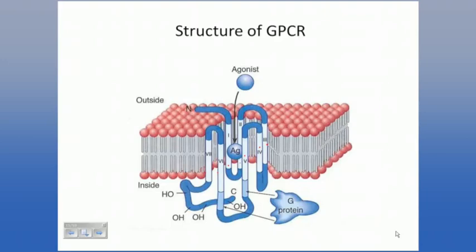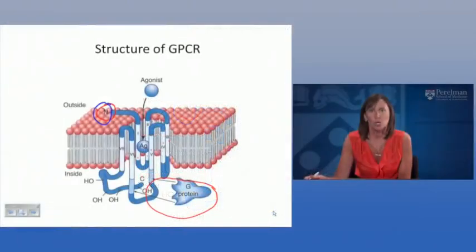In terms of receptor activity, there are two important components of this entire structure. One is the extracellular domain, and the other is the cytoplasmic domain, very similar to what we've talked about for all the other four different receptor subtypes. So here you can see the extracellular domain, and then the intracellular piece, which is coupled to a G-protein — hence G-protein coupled receptor.